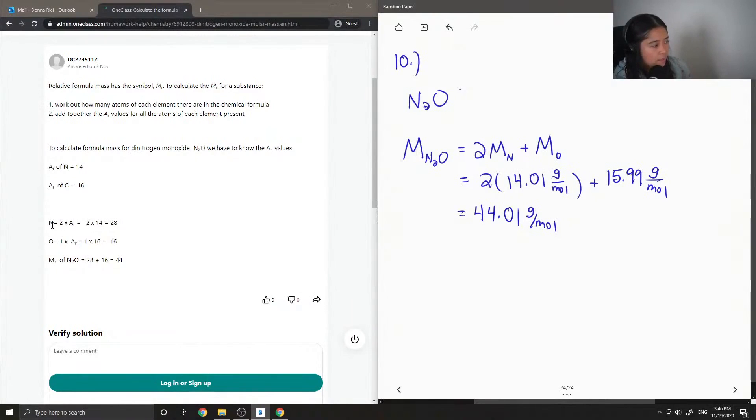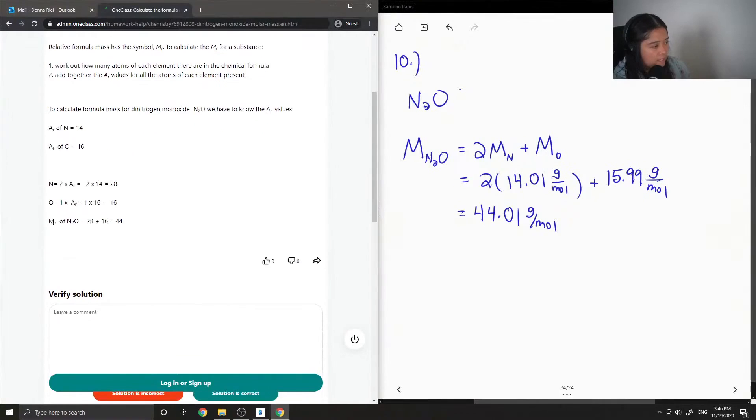And then they showed the multiplying it out. And then the last step is to add 28 plus 16 to get 44. Yep, so this solution is correct.